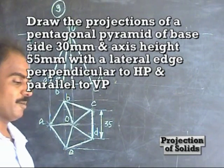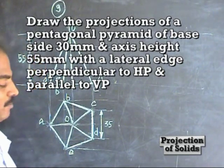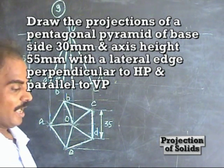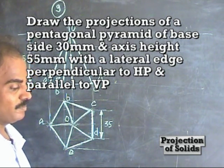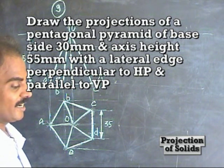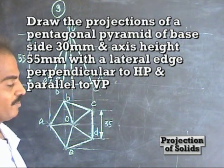Problem Number 9. Draw the projection of a pentagonal pyramid with base side 30 mm, height 55 mm, with a lateral edge perpendicular to HP and parallel to VP.